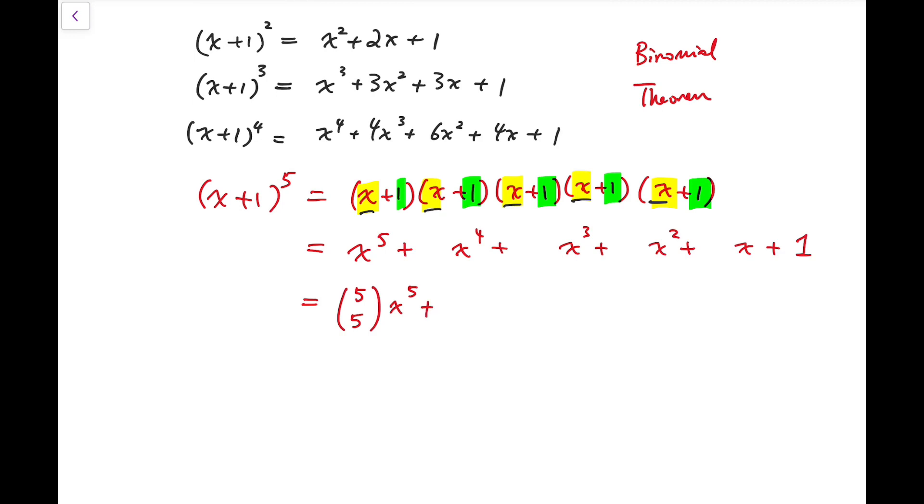And similarly, for x to the power 4, there should be 5 choose 4 number of ways to choose 4x among the 5 copies of x plus 1, and for the remaining 1, 1 will be chosen, and so the outcome will be x to the power 4.